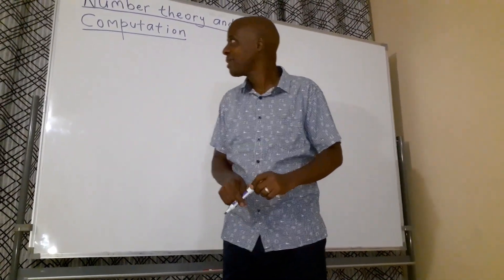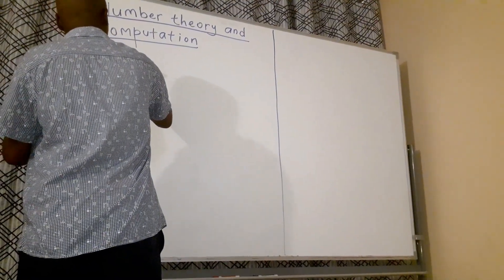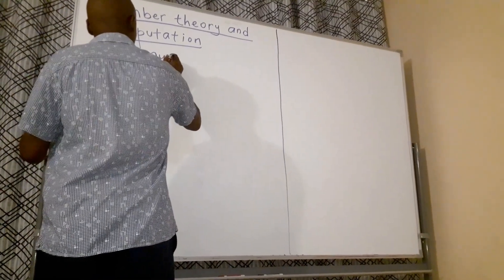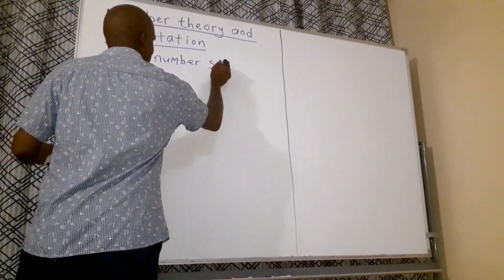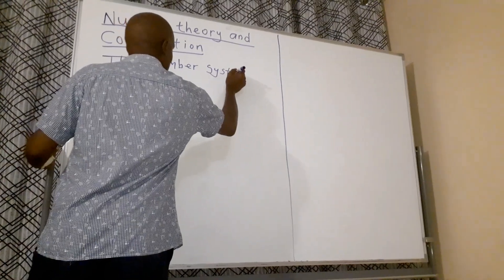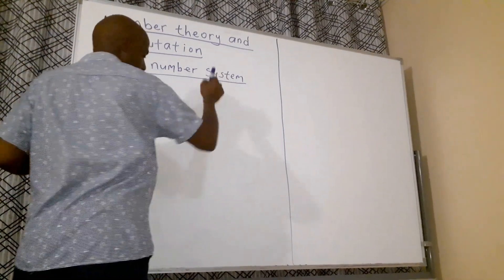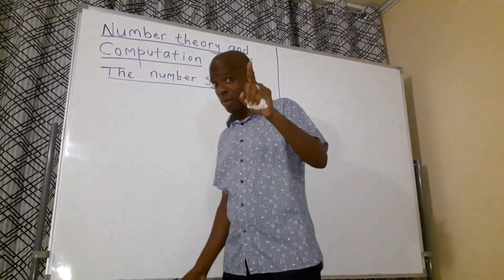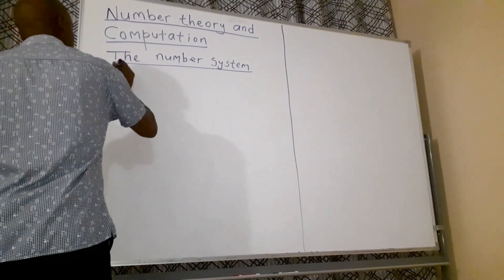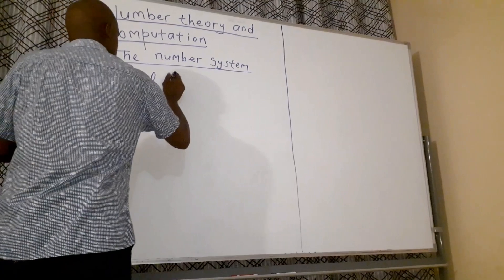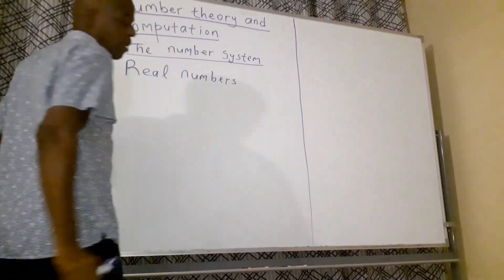The first thing I'll be looking at is called the Number System. Now the Number System comprises what is called Real Numbers, and they are as follows.